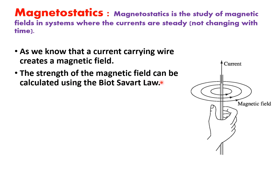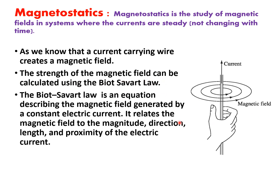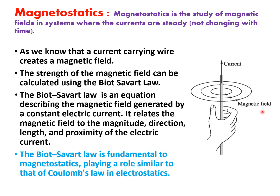The strength of the magnetic field can be calculated using the Biot-Savart law. It is an equation which describes the magnetic field generated by a constant electric current, and it relates the magnetic field to the magnitude, direction, length, and proximity of the electric current. The Biot-Savart law is a fundamental law in magnetostatics, playing a similar role as Coulomb's law plays in electrostatics.